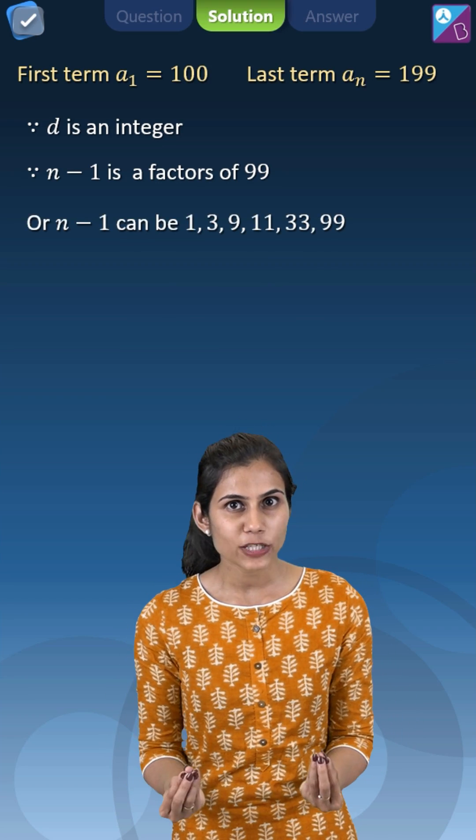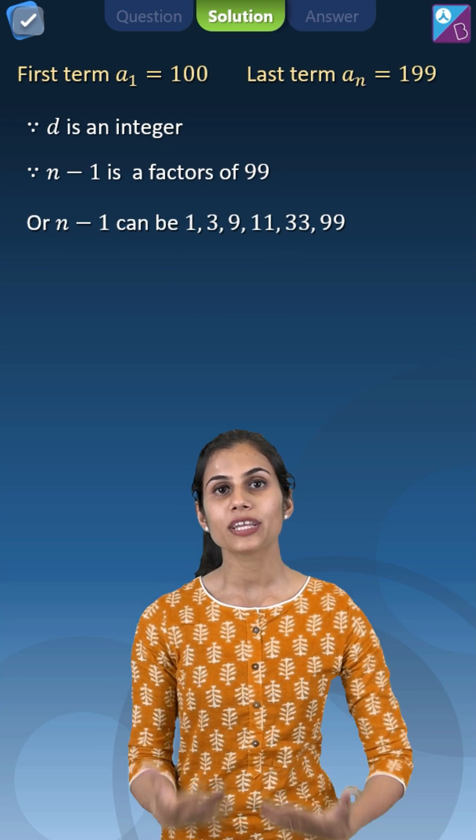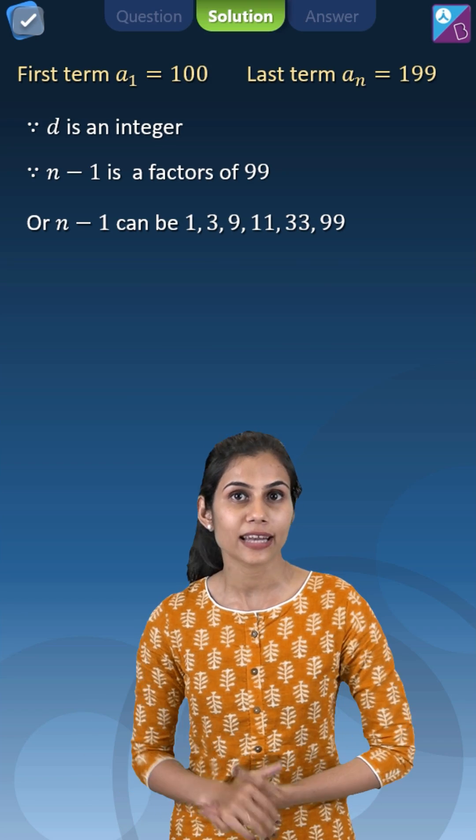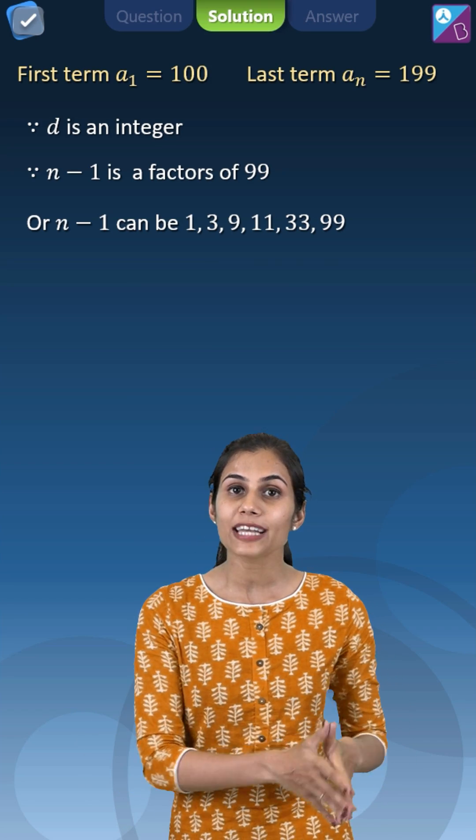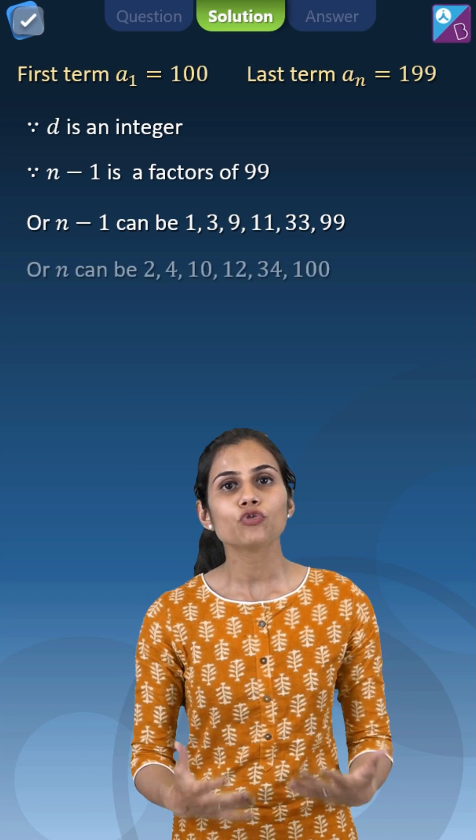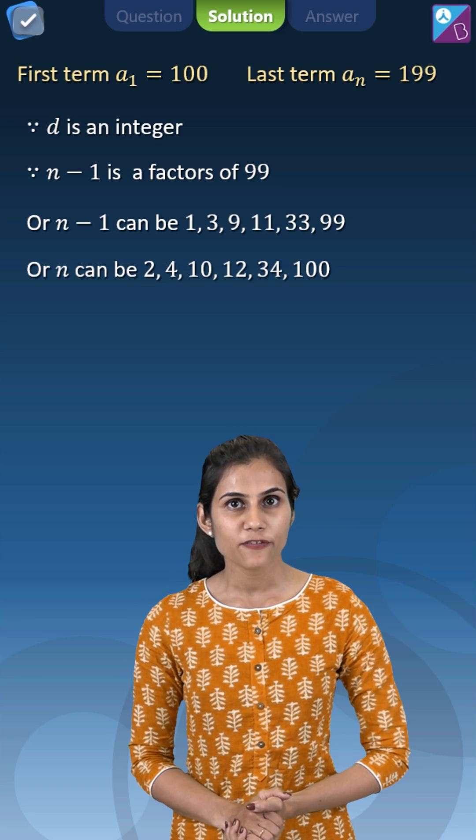So possible values of n minus 1 will come out to be 1, 3, 9, 11, 33 and 99. That means positive values of n will come out to be 2, 4, 10, 12, 34 and 100.